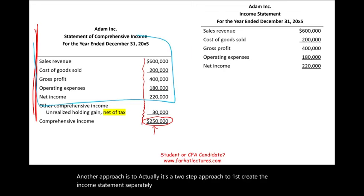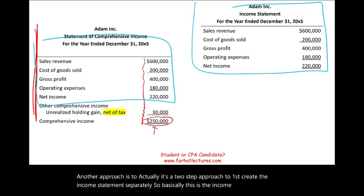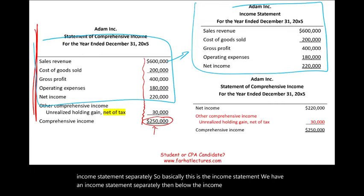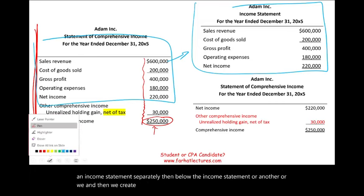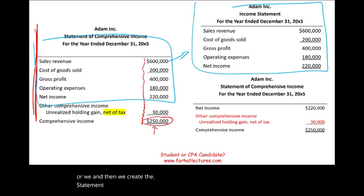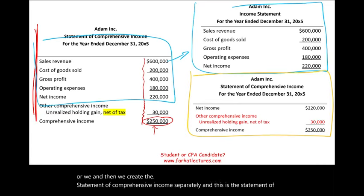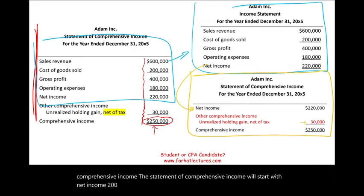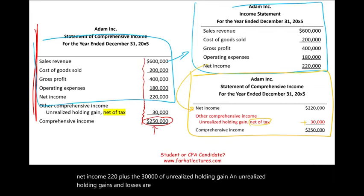In the two-step approach, we have an income statement separately, and then we create the statement of comprehensive income separately. The statement of comprehensive income will start with net income — for example, $220,000 — plus the $30,000 of unrealized holding gain. Note that unrealized holding gains and losses are net of tax, just FYI — you'll learn about that later on.